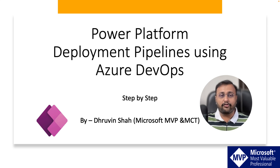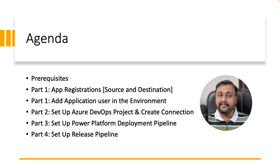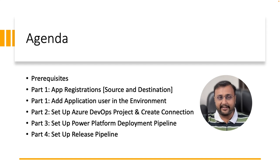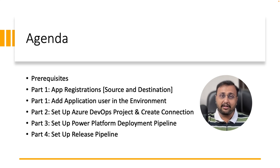Let me give you an overall idea about this entire series. I have divided it into 4 different parts. In the first episode we will talk about prerequisites to get started with DevOps deployment and the different types of app registration concepts at the source and destination side. In the second episode we will set up the Azure DevOps project and create connections. In the third episode we will set up the Power Platform Deployment Pipeline. And in the fourth and last episode we will set up the release pipeline and perform end-to-end migration from one Power Platform environment to another.